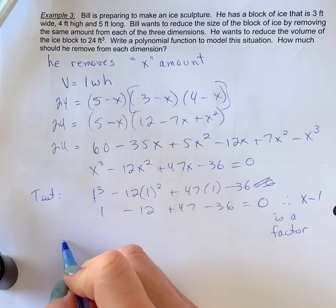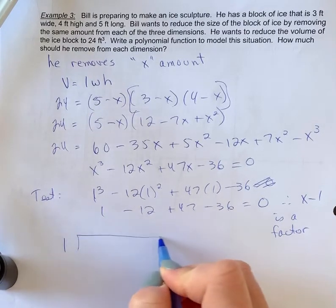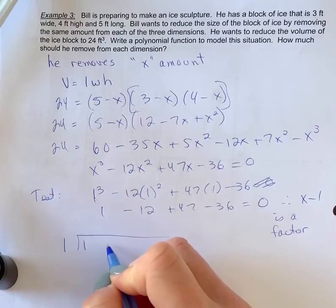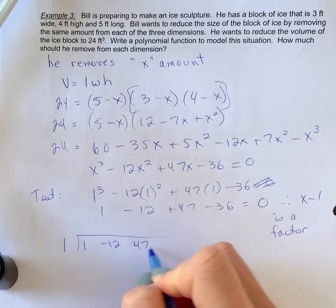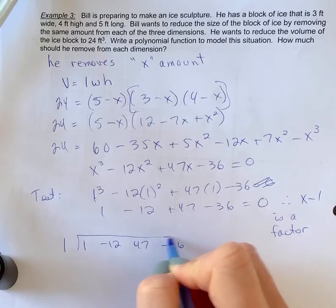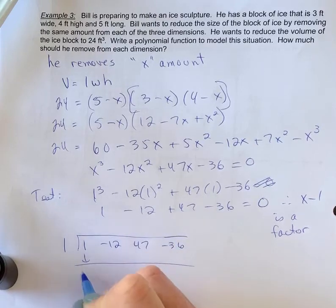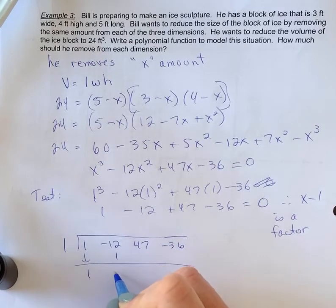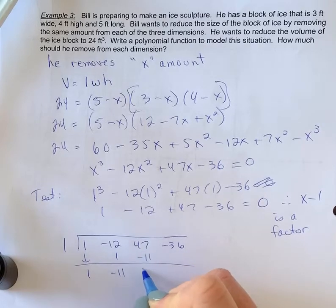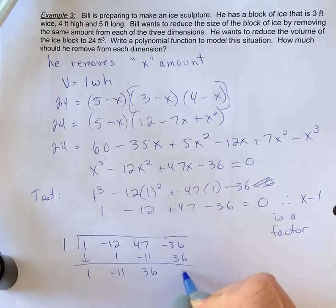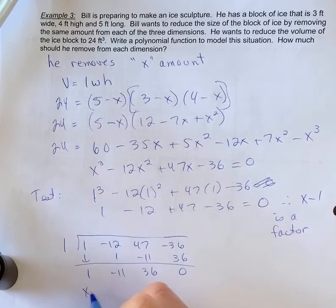So set that up. So we're factoring this. We've got 1 minus 12, 47 minus 36. Bring down the 1. Multiply, add, multiply, add, multiply, add. Again, of course, you're going to get a remainder of zero. So this is what it looks like factored.